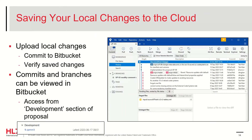Once the changes to the content are complete, it is time to save or commit your changes to the Bitbucket repository. Save your changes locally and then commit the changes to Bitbucket. To finish, you must then push your changes to the Bitbucket cloud. The Bitbucket environment with the history of your commits can be accessed from the development section of the proposal, which lists your branch and your commits. This helps to verify that you've saved and uploaded your changes before you submit your proposal.